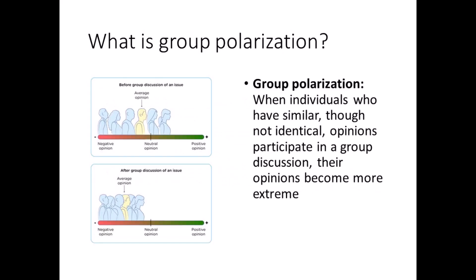Group polarization is the second process. When group members have similar beliefs at the start of a discussion, their opinions tend to become more extreme as they discuss the topic. Discussion among like-minded people tends to strengthen pre-existing attitudes. If most individuals in the group are cautious, then the group will probably be cautious. If most individuals are risk-takers, then the group will probably take risks. Sometimes this polarization creates division in the group.